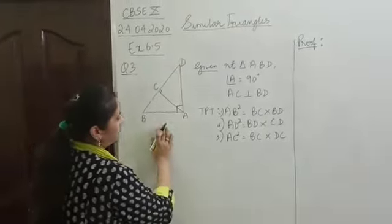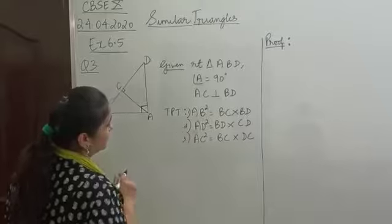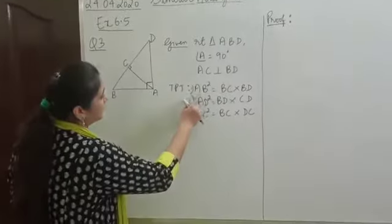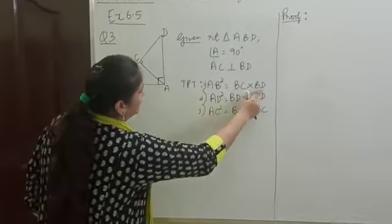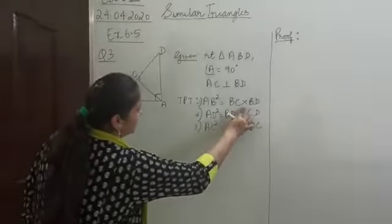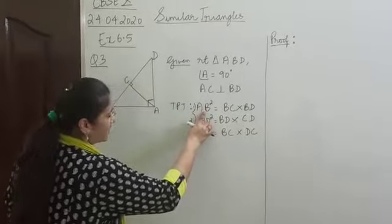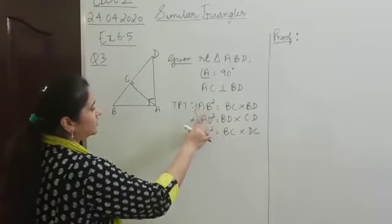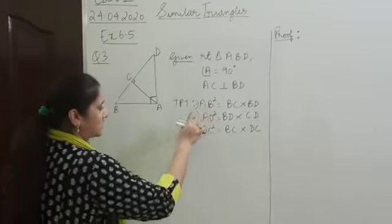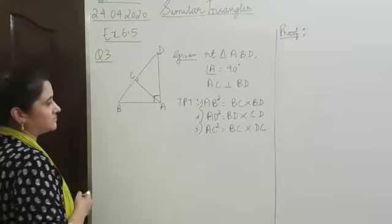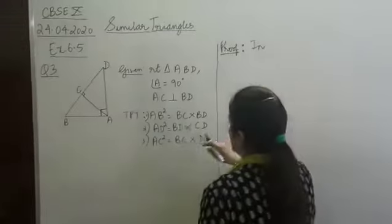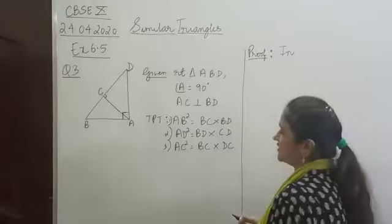With this information, we need to prove three results. Let's take up the first one. We need to show that AB² equals BC into BD. As we have seen earlier, if we need to get an expression for AB², we need to take up two triangles which have AB as a common side and show that they are similar to each other.